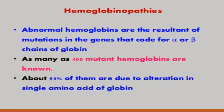As many as 400 mutant hemoglobins are known, and about 95% of them are due to alteration in a single base which results in a change in a single amino acid of the globin chain.